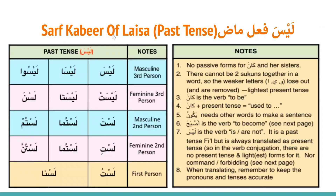We are now coming to laisa, another philinaqis. With laisa, we don't have present tense conjugation, because laisa is the verb meaning 'is not' or 'are not.' Though grammatically it's a past tense fail, it is always translated as present tense. So in the verb conjugation, there are no present tense, light, or lightest forms, nor commanding or forbidding. Only past tense conjugation exists for laisa.